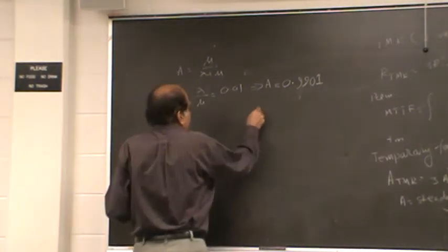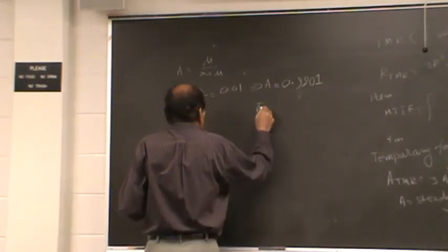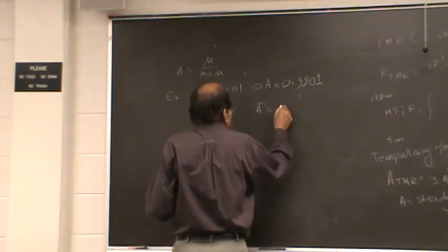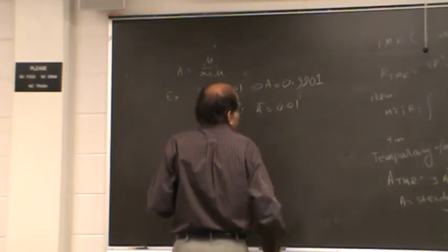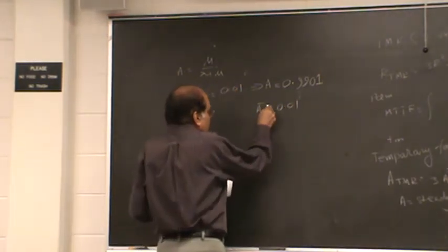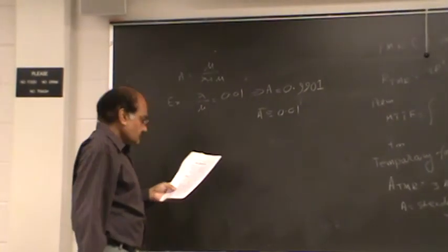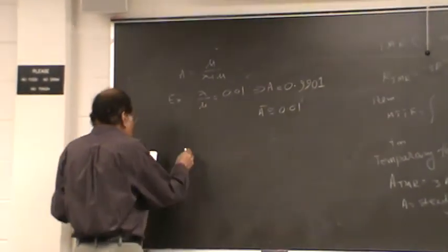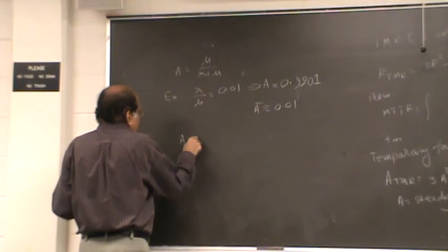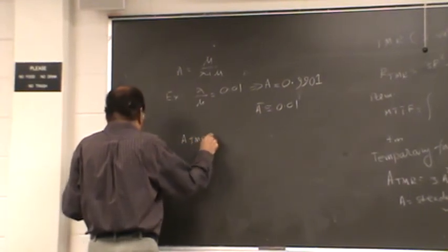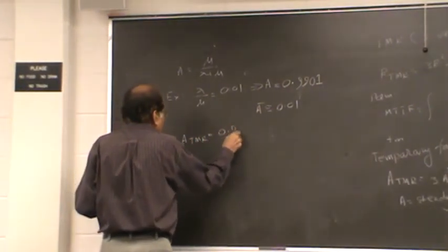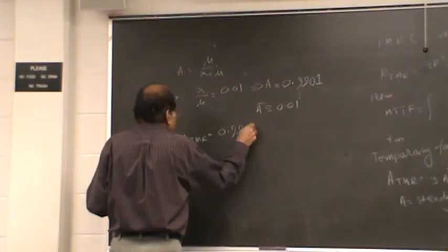We can say unavailability is equal to 0.01 approximately. Notice that availability of TMR is equal to 0.9997.